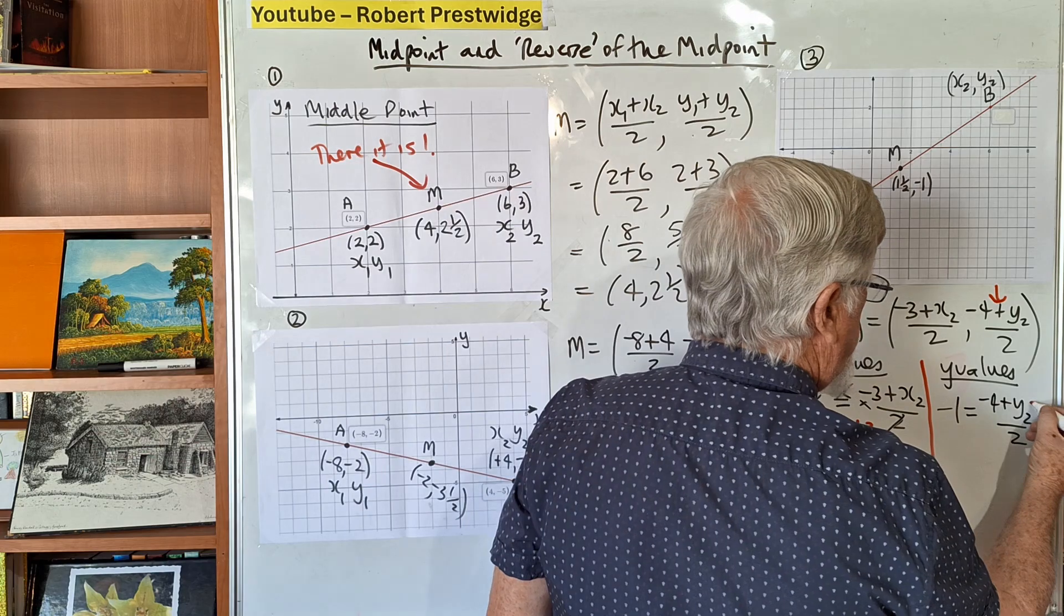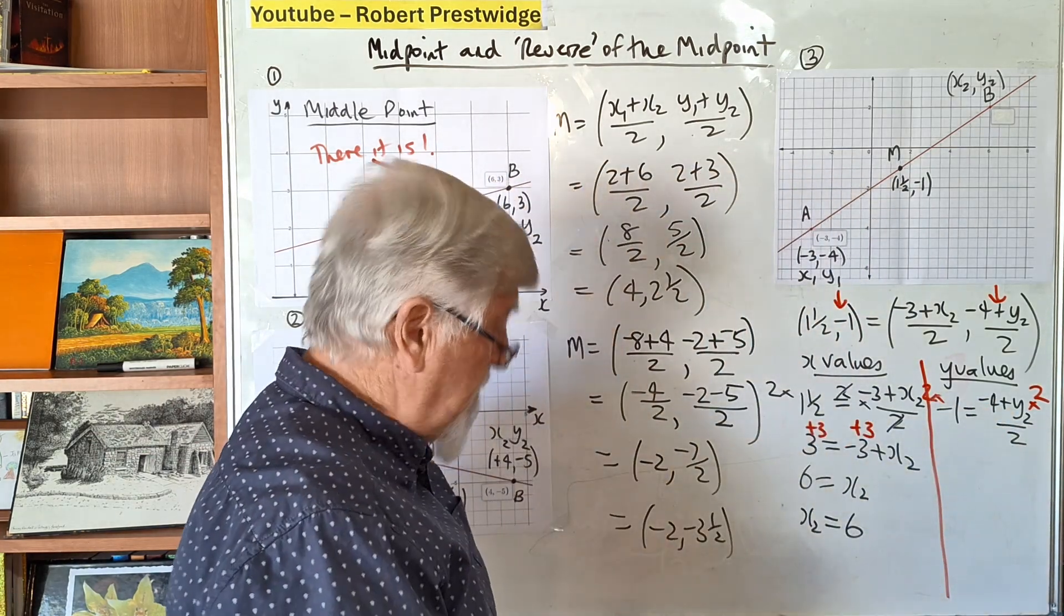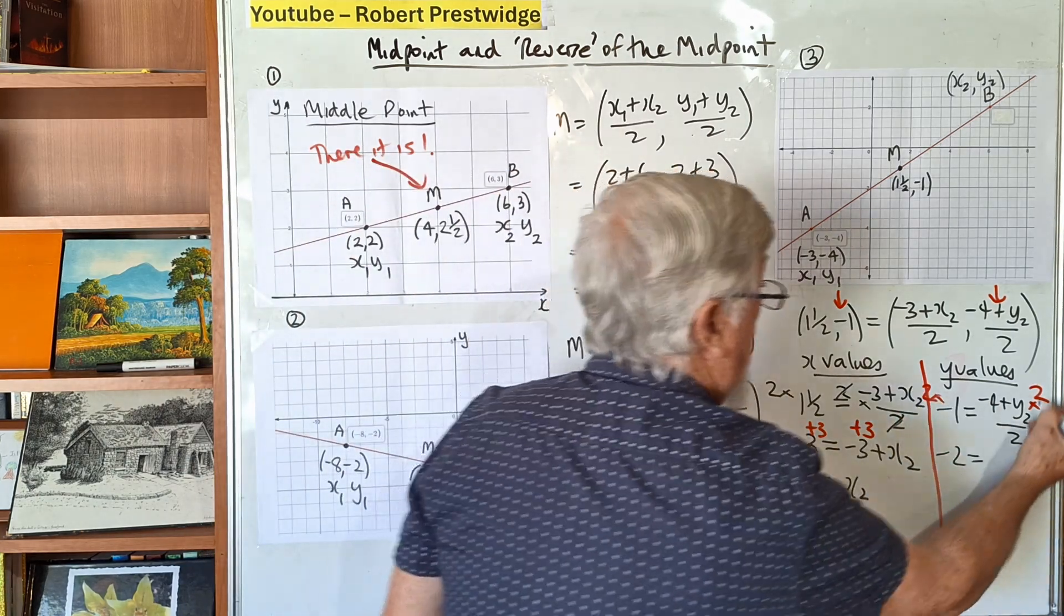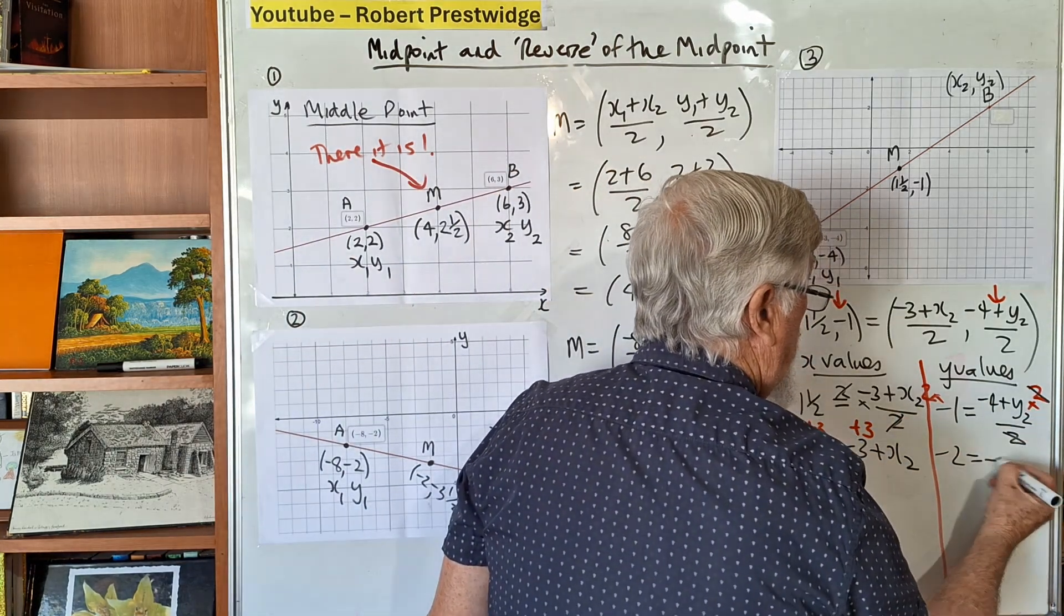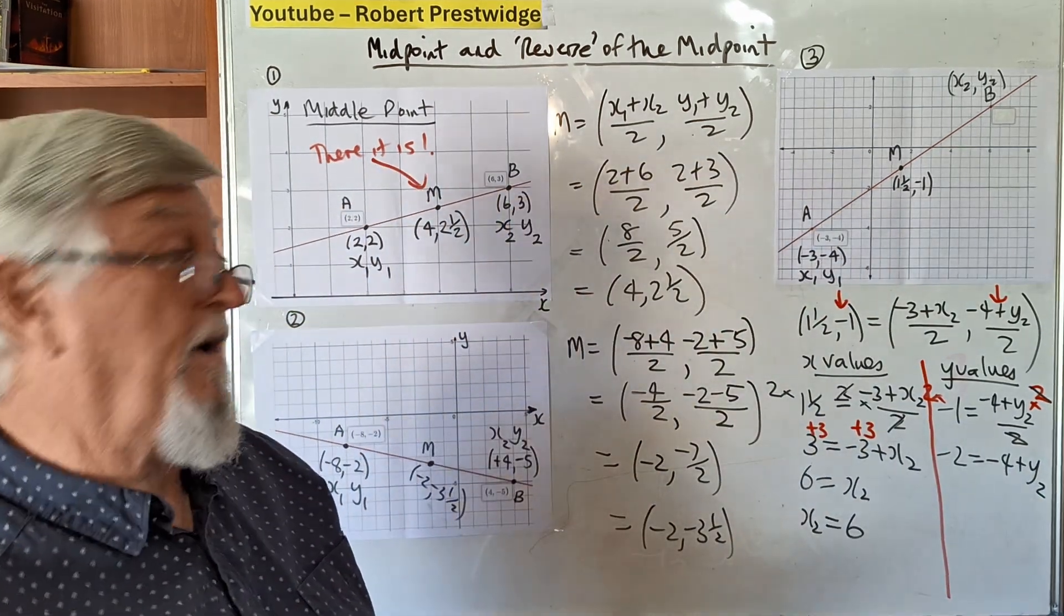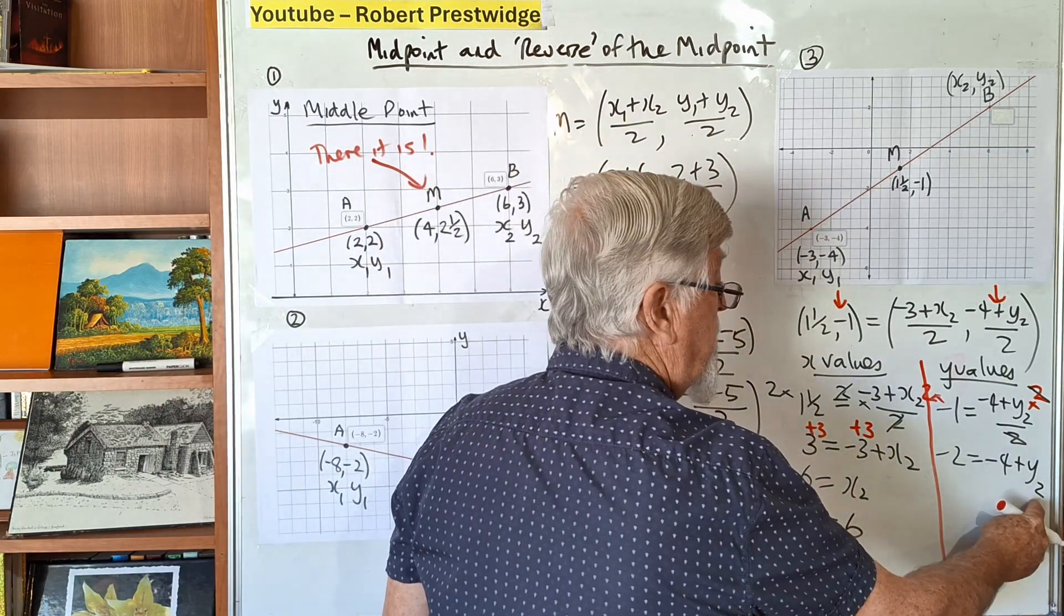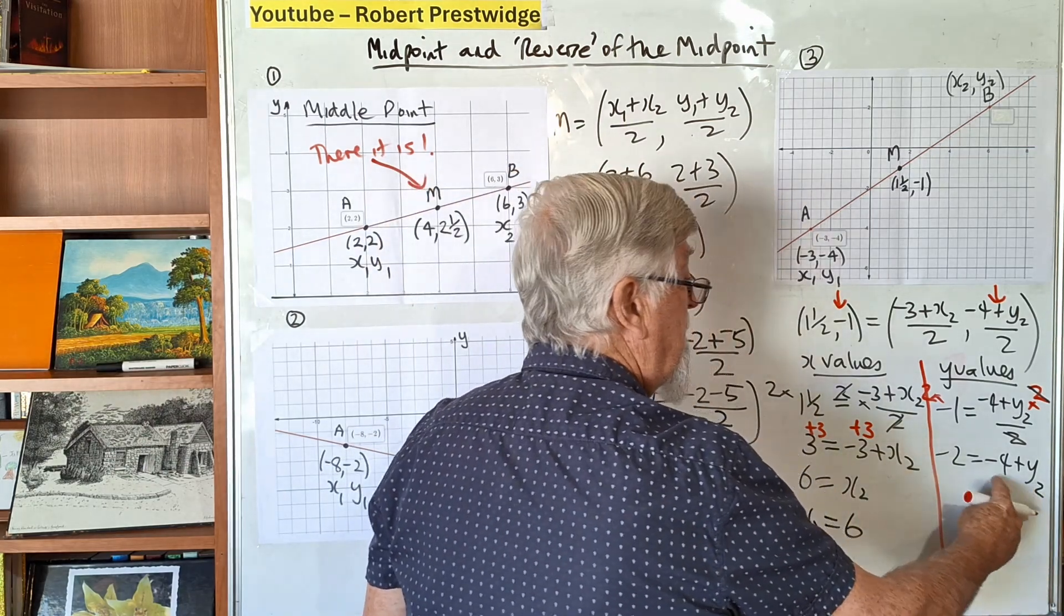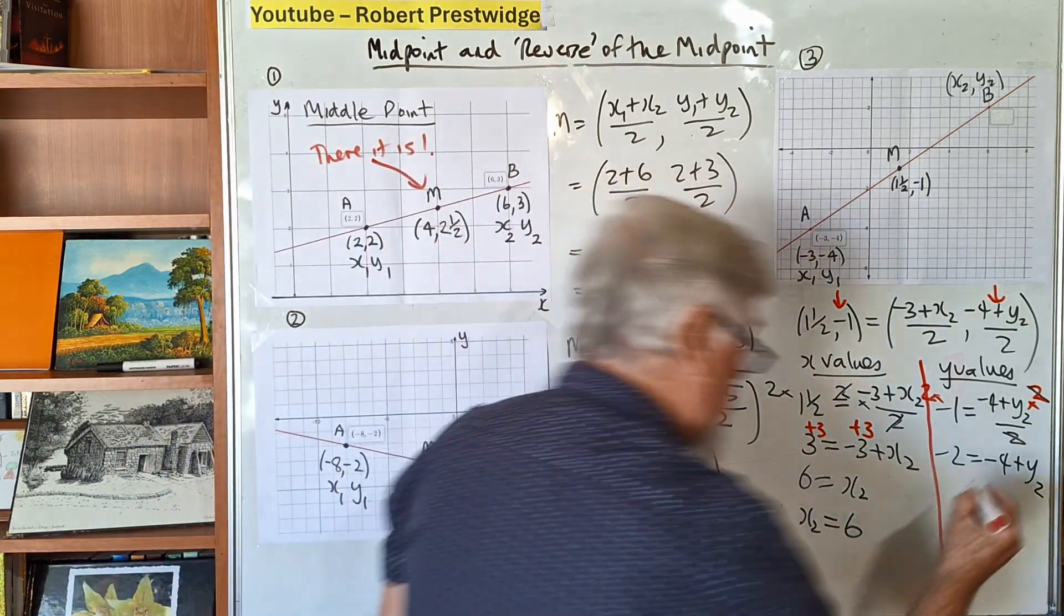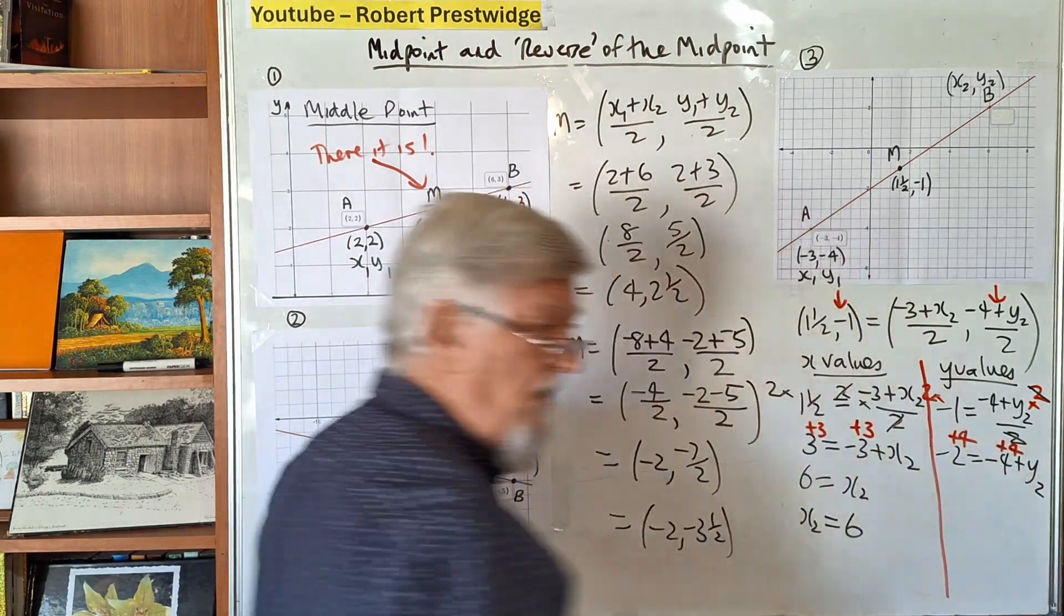Times this side by 2, times that side by 2. Two times -1 is -2, the 2s cancel, and I've got -4 + y₂. To get y by itself, get rid of the -4. The opposite is plus 4.